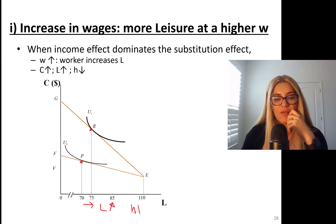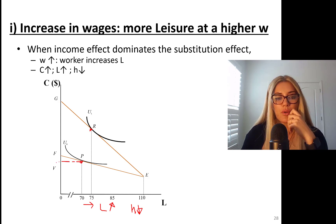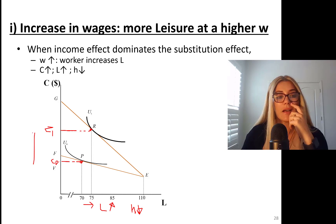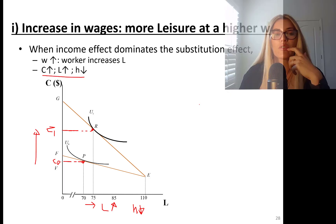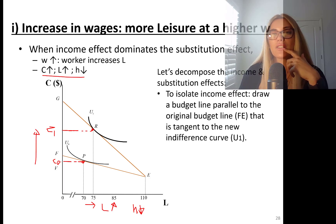Consumption went way up. Leisure went up. You consume more consumption goods and more leisure, and you work fewer hours. We can actually decompose the income and substitution effects in this graph.